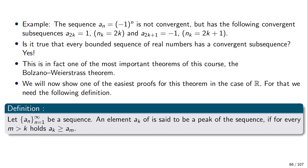So we have a sequence and we say that an element a_k of the sequence is called a peak of the sequence if for every m greater than k — that is, every element with a bigger index — that element has to be smaller than a_k. To see what this definition means, let us go into an example and see what exactly it means.